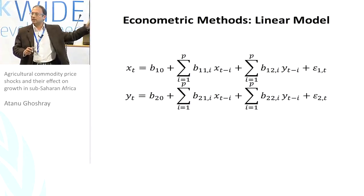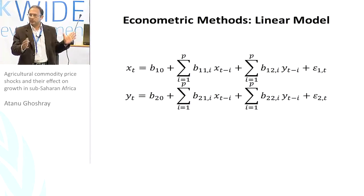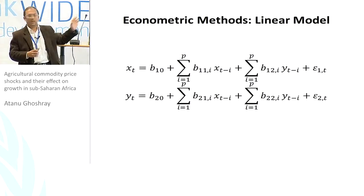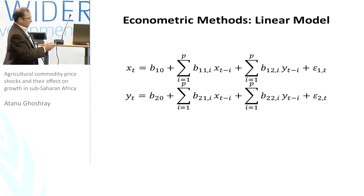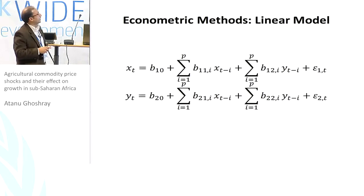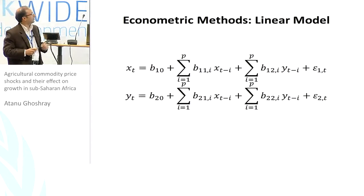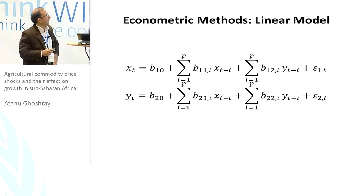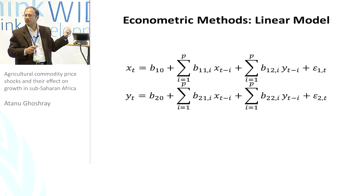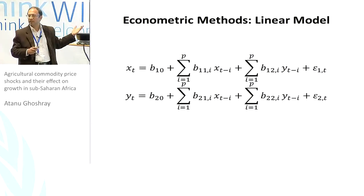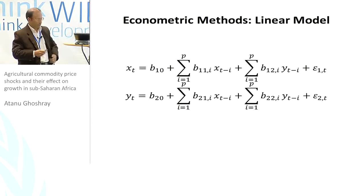The standard VAR model used in a linear approach — as in past studies using panel VAR and panel ECM — works as follows: the coefficient B21 in the second equation, if found to be significant, indicates that X has a causal relationship on Y. So X could be commodity prices and Y could be GDP per capita.